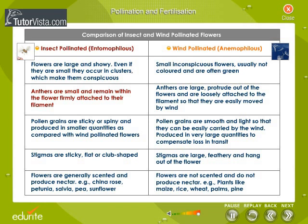The anthers of wind pollinated flowers are large, protrude out of the flowers, and are loosely attached to the filament so that they are easily moved by wind. Pollen grains of insect pollinated flowers are sticky or spiny and are produced in smaller quantities compared to wind pollinated flowers. The pollen grains of wind pollinated flowers are smooth and light so they can be easily carried by the wind, and are produced in very large quantities to compensate for loss in transit.